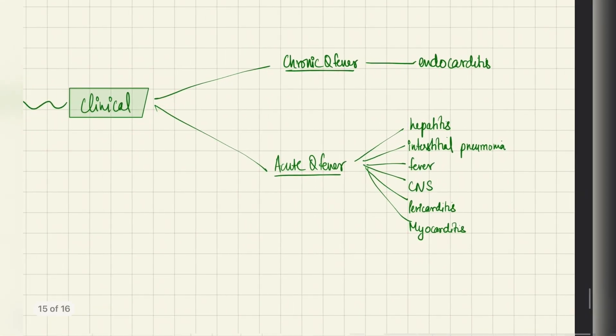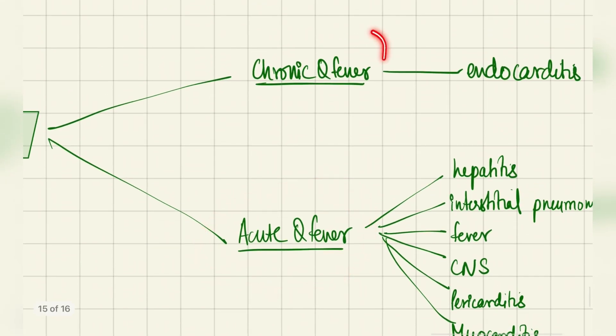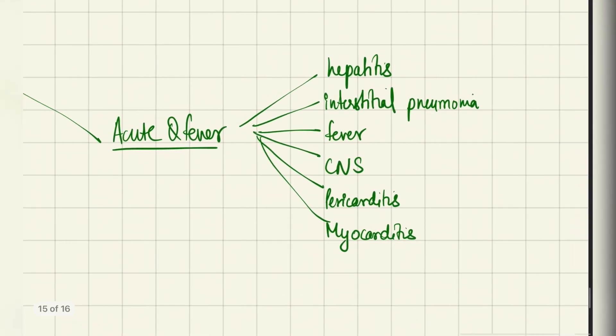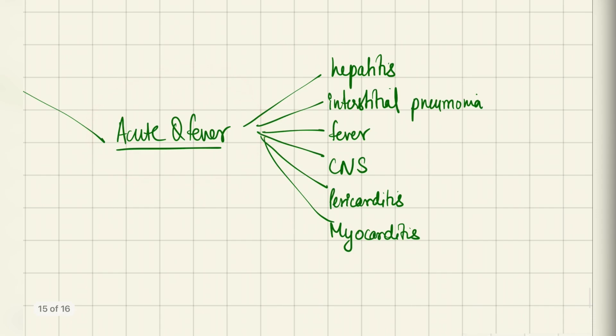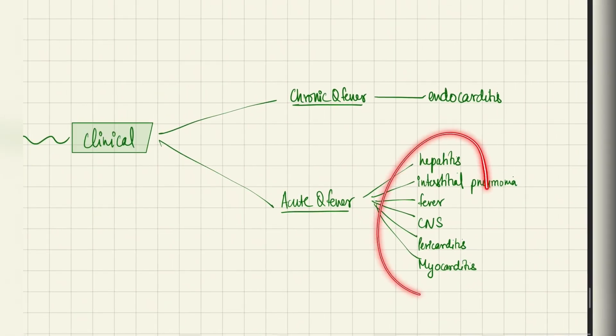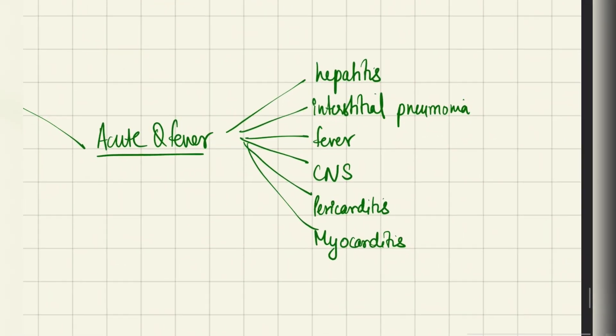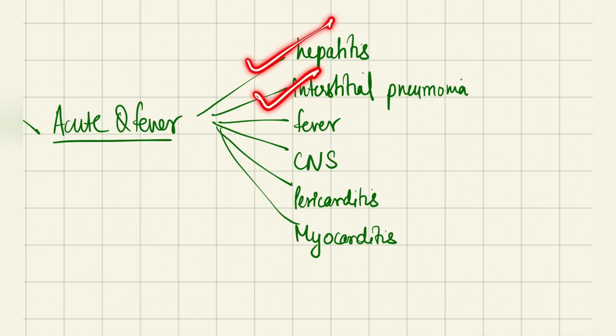Clinical features: you get either acute Q fever or chronic Q fever. Acute Q fever is more severe. As you can see, we have so many here and just one here. In acute Q fever, we have hepatitis, interstitial pneumonia, fever, CNS manifestation, pericarditis, and myocarditis.